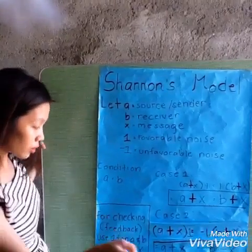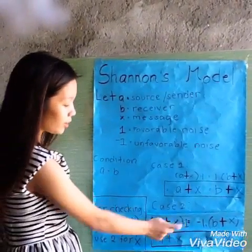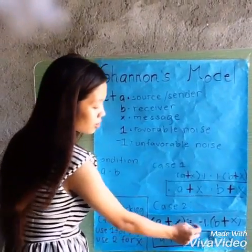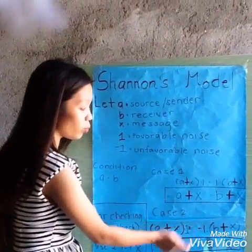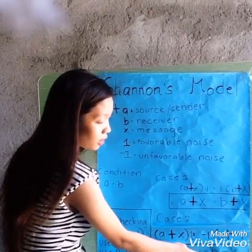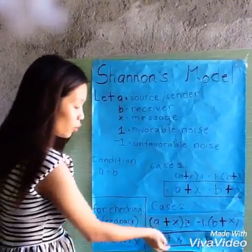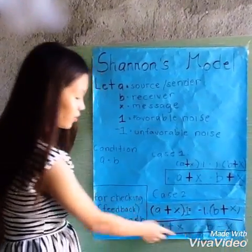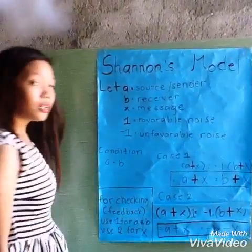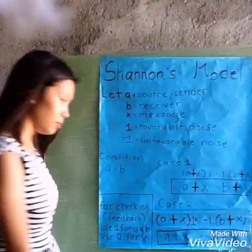In case number two, we will use unfavorable noise. One times A equals A, one times X with unfavorable noise negative one gives: negative one times B equals negative B, negative one times X equals negative X. Which means they are not both equal because the sender is positive and the receiver is negative.